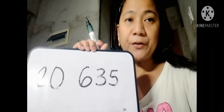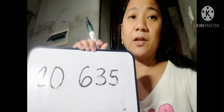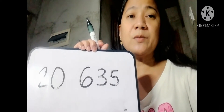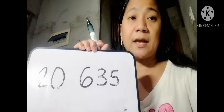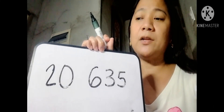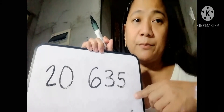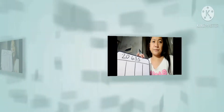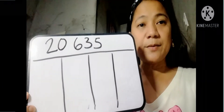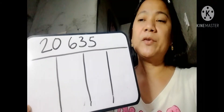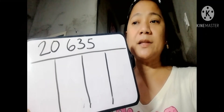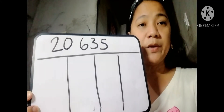After identifying the place value of each number, we will proceed to step number 2. We will create a table separating the different place values of the given number. So this is the table that I made. Remember, for each value, we will determine the disk that we will use.